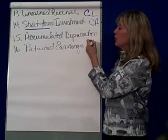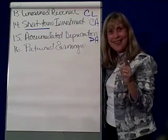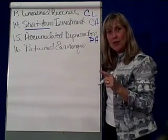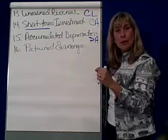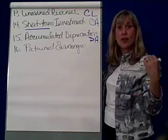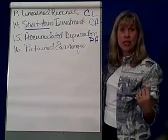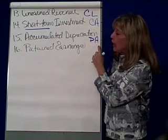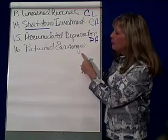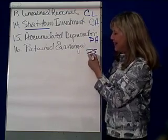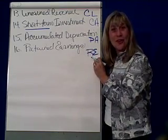Accumulated depreciation is a plant asset — it's a contra shadow account to any building or equipment. There's accumulated depreciation for buildings and accumulated depreciation for equipment, so it falls under property, plant, and equipment. Finally, retained earnings — this one's easy. It's retained earnings, part of stockholders' equity, representing internal ownership.